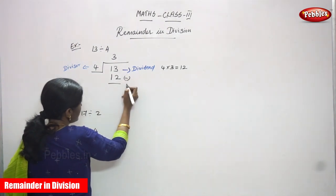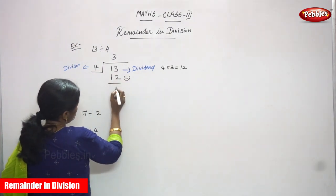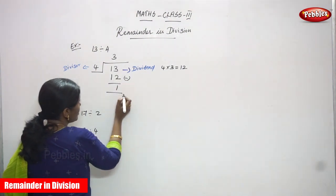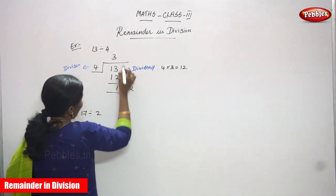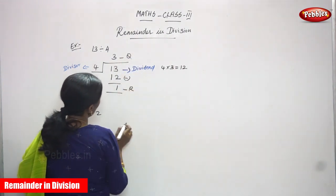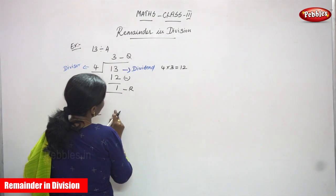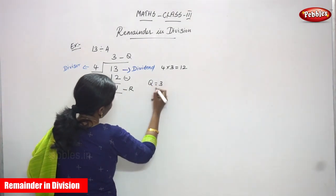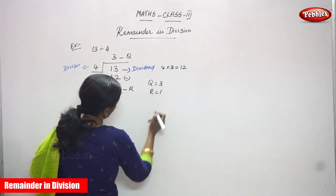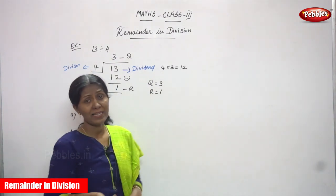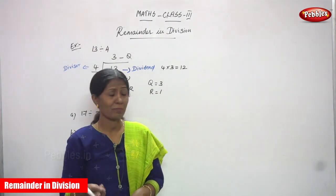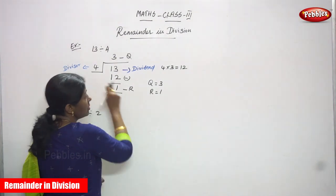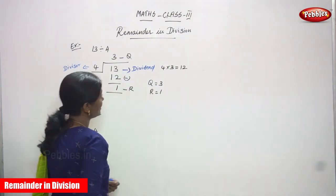After that you have to subtract. So 3 minus 2 you can get 1, and 1 minus 1 you can get 0, so no need to write. This is the reminder and this is the quotient. What is the reminder in division? 1. So quotient is 3 and reminder is 1. The leftover number is called as a reminder. And always the reminder is less than the divisor.